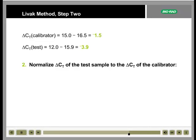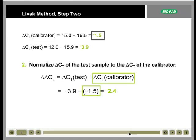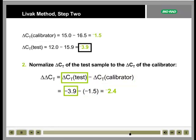Next, we normalize the delta-CT of the test sample to the delta-CT of the calibrator. In other words, we subtract the delta-CT of the calibrator from the delta-CT of the test sample. The value obtained represents the change in expression of the gene of interest between the test and calibrator conditions, normalized for any differences in loading between the reference and test samples.